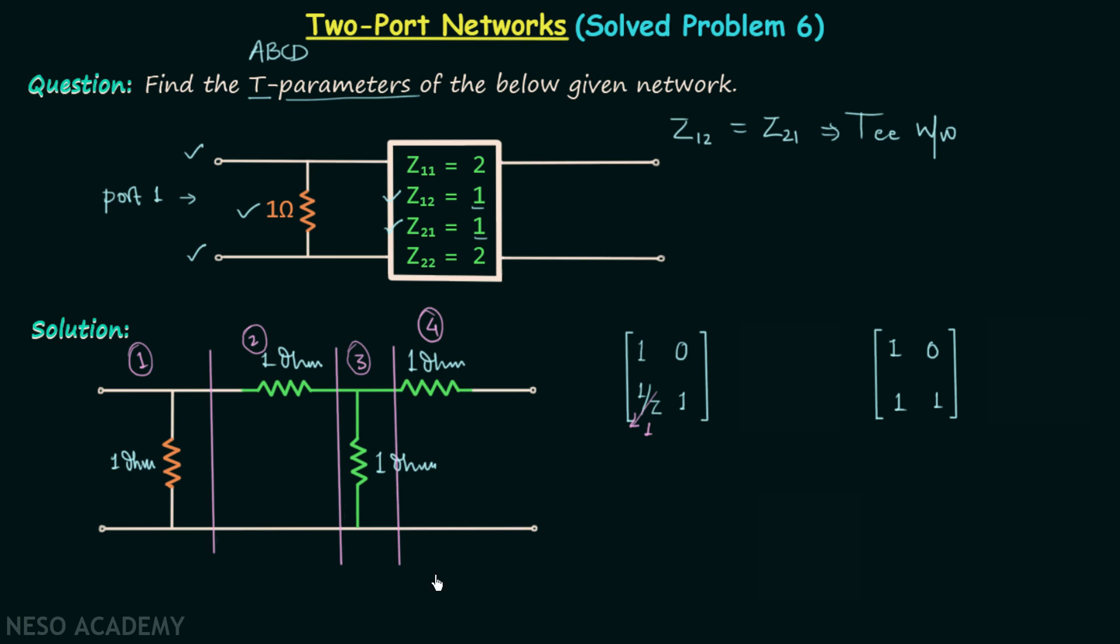Moving on to the network number 2, we know it will have the T-parameters matrix as 1, Z, 0, 1. Z is equal to 1 ohm, therefore we will have the elements as 1, 1, 0, 1. And the network number 4 is same as network number 2, therefore it will have the same T-parameters matrix.